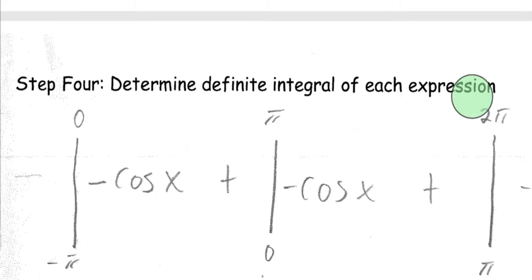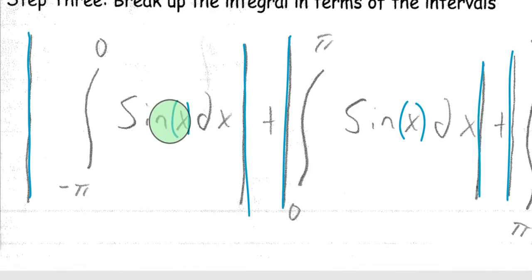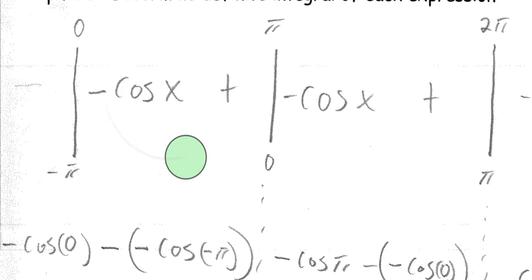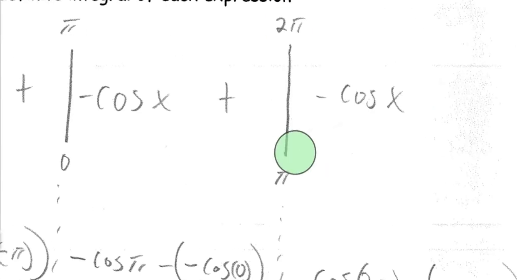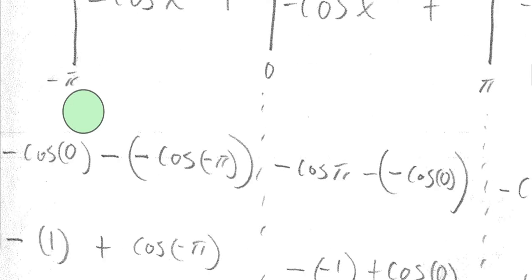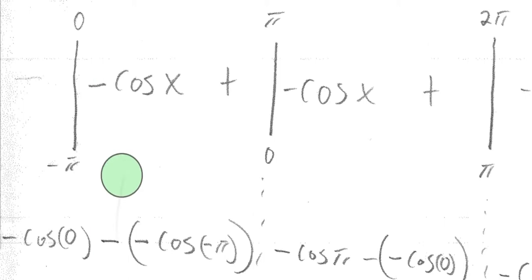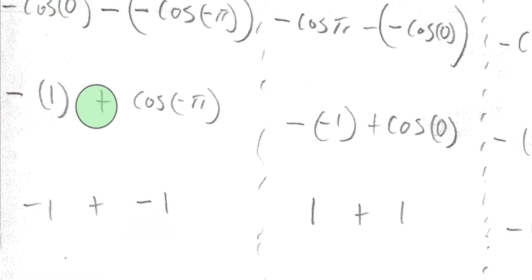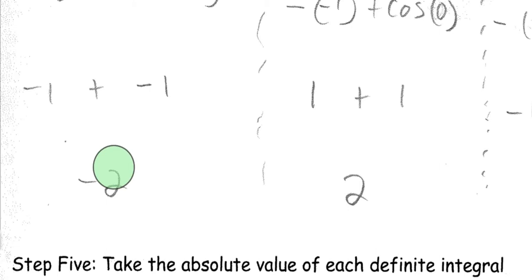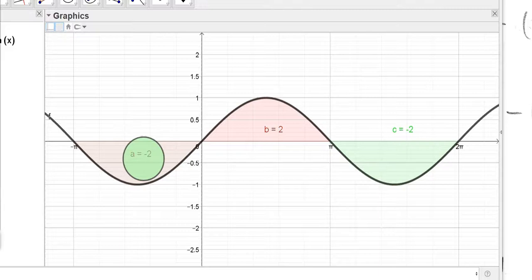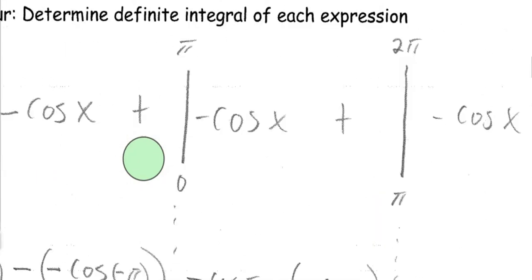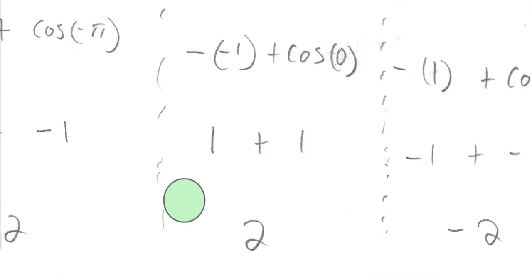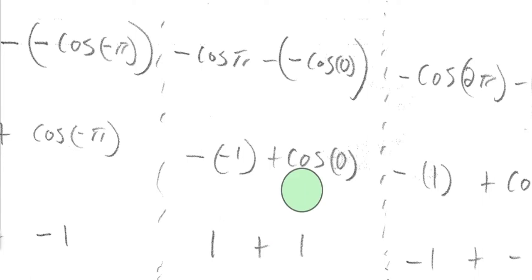Step four: determine the definite integral of each expression. The antiderivative of sin(x) is negative cos(x) — not positive cosine; that only works going from cosine to sine. We split into three integrals based on those three sets of limits. For the first, it's negative cos(0) minus negative cos(negative pi) — a double negative — so it becomes negative one plus cos(negative pi). Cosine of negative pi is also negative one, giving negative two. For the middle integral, with limits zero to pi, we get positive one plus one, which equals two.